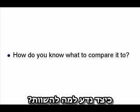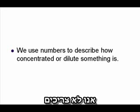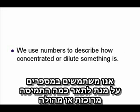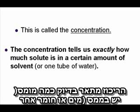How do we know what to compare to it? We don't have to. We use numbers to describe how concentrated something is. The concentration tells us exactly how much solute is in a certain amount of solvent.